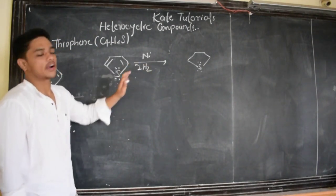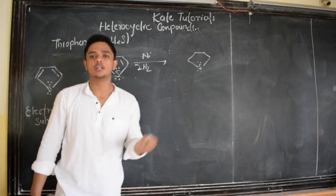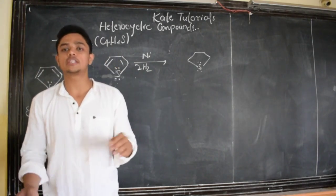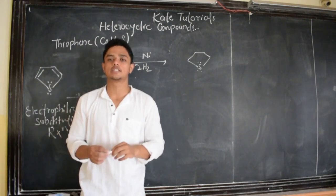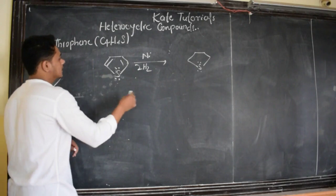Nickel in presence of hydrogen when heated is a strong reducing agent because it is going to add hydrogen. The one which adds hydrogen is a reducing agent, and one which gives oxygen is an oxidizing agent.